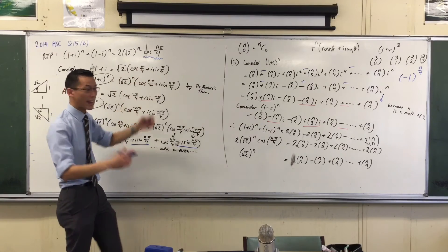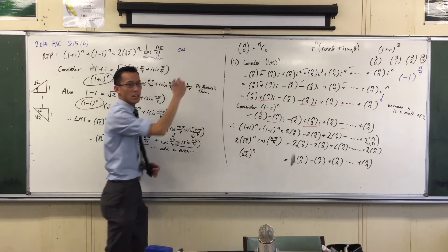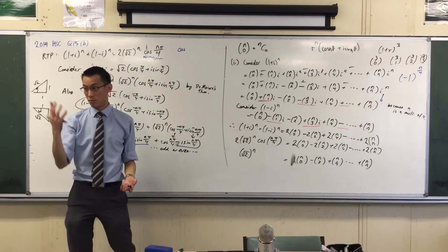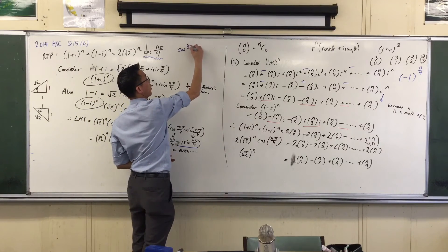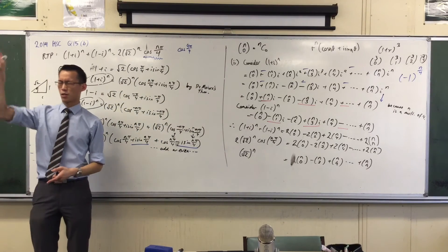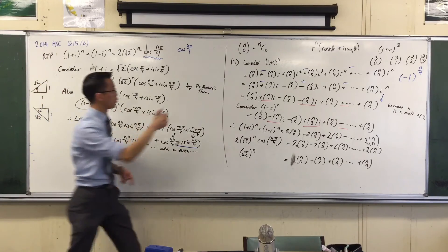It's 4, right? So the first one will be cos 4π/4. Cos π. Cos π. It's going to be negative 1. Very good. What's the next n going to be?